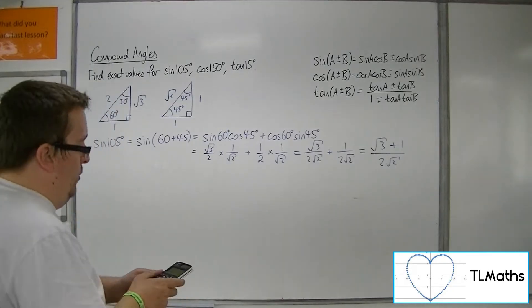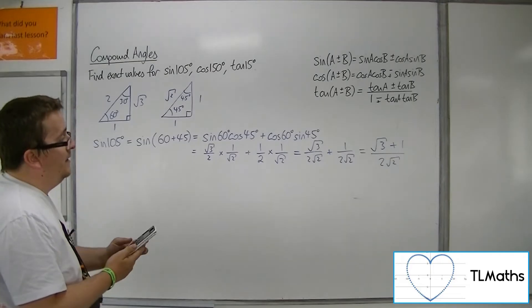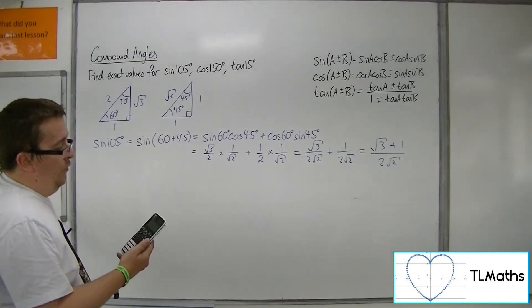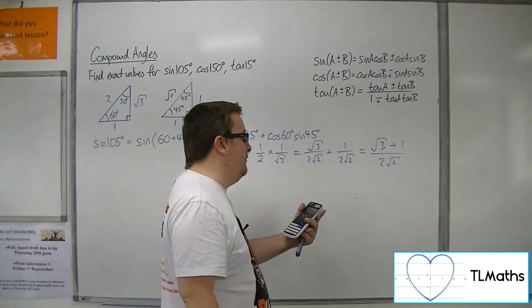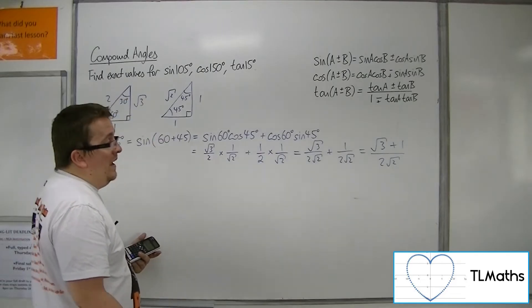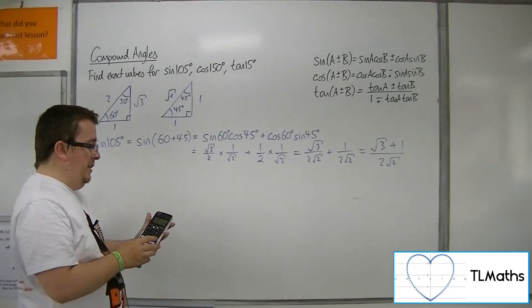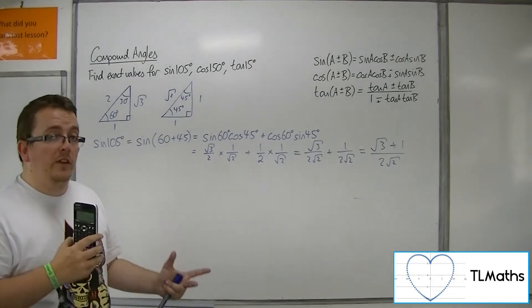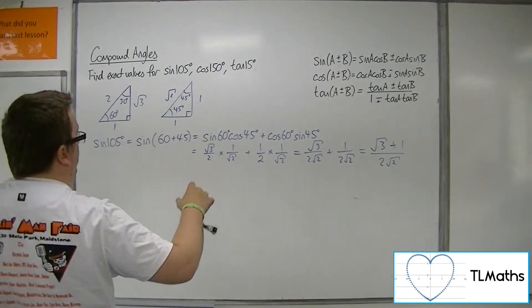You can type sine of 105 degrees into your calculator, and on this ClassWiz it actually gives you root 6 plus root 2 over 4. You can get that by multiplying top and bottom by root 2. But you cannot guarantee that your calculator is going to find every value for you. You need to show the process.